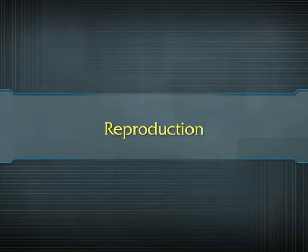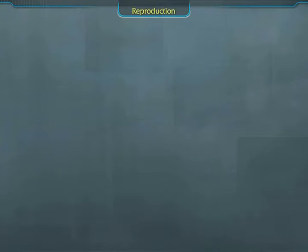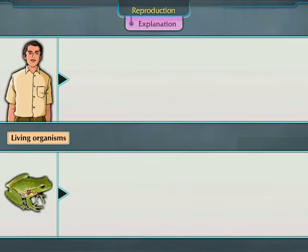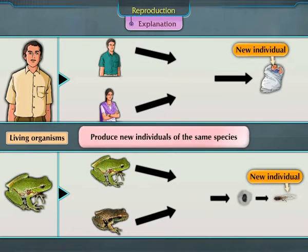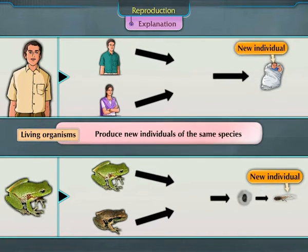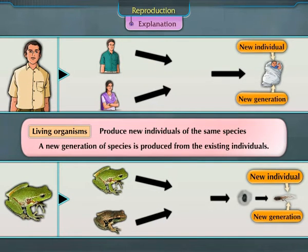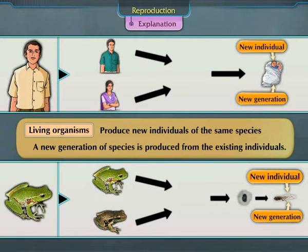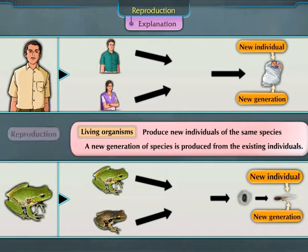Living organisms produce new individuals of the same species. A new generation of species is produced from the existing individuals. This fundamental characteristic of living things is known as reproduction.